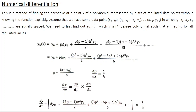Differentiating y with respect to p: the first term y₀ is a constant so its derivative is 0; the second term p·Δy₀ gives Δy₀; the term (p²−p)/2·Δ²y₀ gives (2p−1)/2·Δ²y₀; and the next term gives (3p²−6p+2)/6·Δ³y₀. Writing all terms up to the (n−1)th difference and multiplying by 1/h gives dy/dx — a simple equation for the derivative at a given x point.